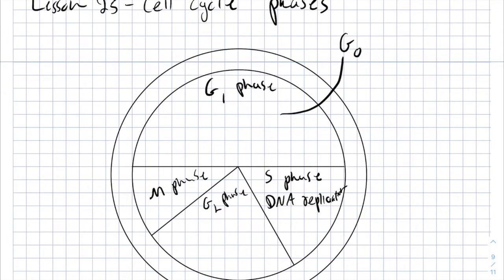In general, the G1, S, and G2 phases all occur during a phase called the interphase.